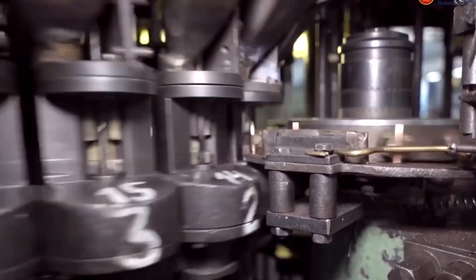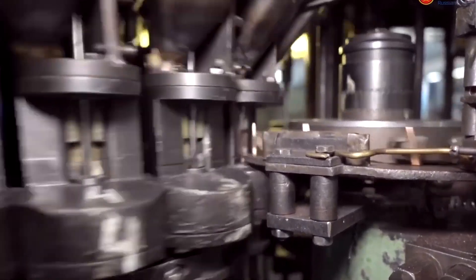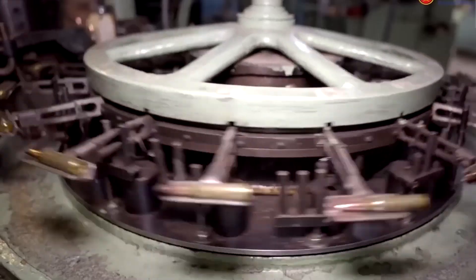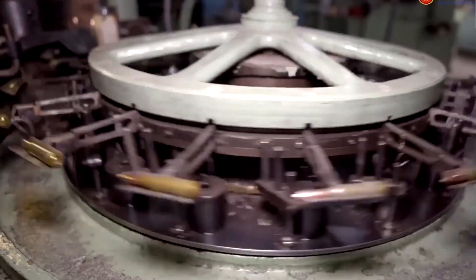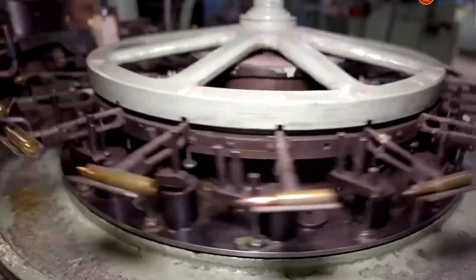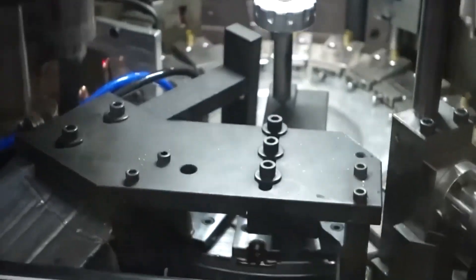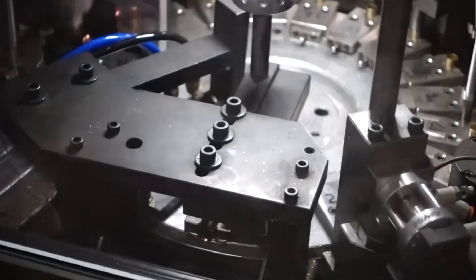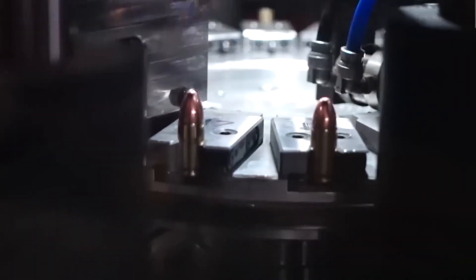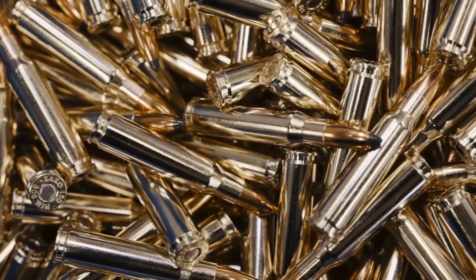In high-volume production, these machines operate at remarkable speeds. Modern ammunition plants use progressive presses with multiple stations, processing several rounds simultaneously at different stages. A single machine might complete 10 to 15 rounds with each cycle, operating at one to two cycles per second.